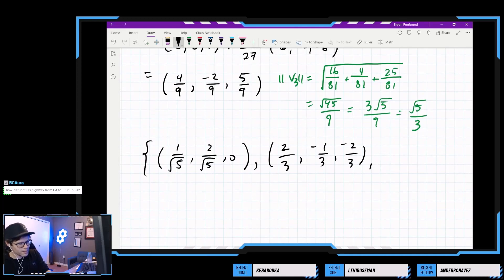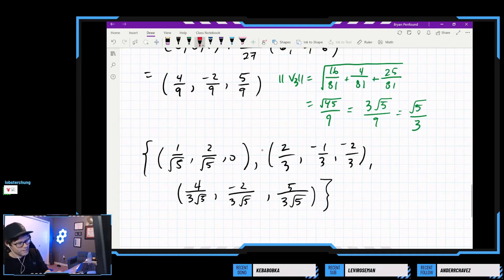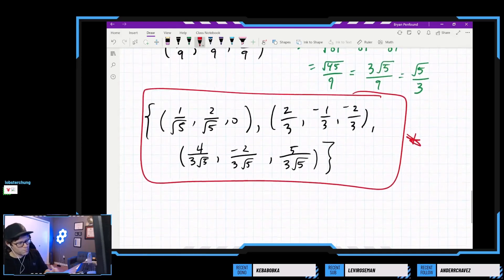Vector 3 is a bit weird, isn't it? We have to divide by root 5 over 3. So we're going to be getting a vector that's like 4 root 5 over 3, negative 2 root 5 over 3. The root 5 is in the denominator. So if we do 4 ninths, it's going to be times this. So the root 5 has to go into the denominator. So it's going to be 4 over 3 root 5, negative 2 over 3 root 5, and 5 over 3 root 5. So this is our set of orthonormal vectors.